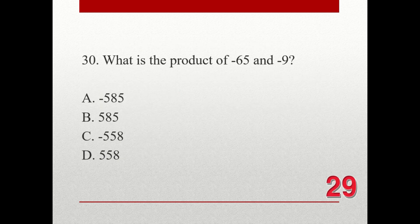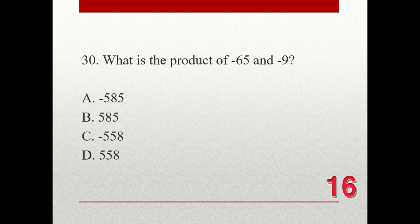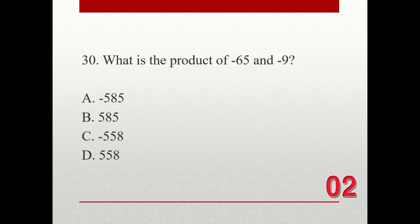Question number 30. What is the product of negative 65 and negative 9? A. Negative 585. B. 585. C. Negative 558. D. 558. The correct answer is B. 585.